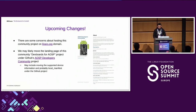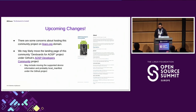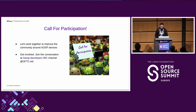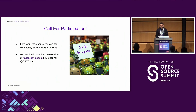On upcoming changes: we have had some concerns from community members about hosting this community page on the Linaro.org domain, particularly from a non-ARM dev boards ecosystem point of view. So we are open to utilizing the GitHub AOSP Developer Community page for further collaboration, which should be free from these concerns, while we continue using the devboards-for-android.linaro.org domain for hosting and development of our supported devices. We are open to other suggestions as well. We believe this initiative will be instrumental in sharing and co-developing generic software solutions across multiple devices, beneficial for the entire ecosystem. A bunch of us hang out at the AOSP Developers IRC channel — come join us and let's work together to improve the community around AOSP devices.